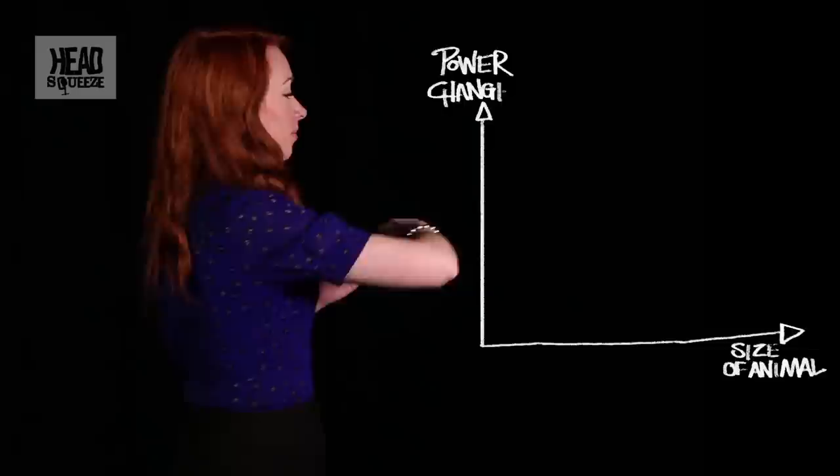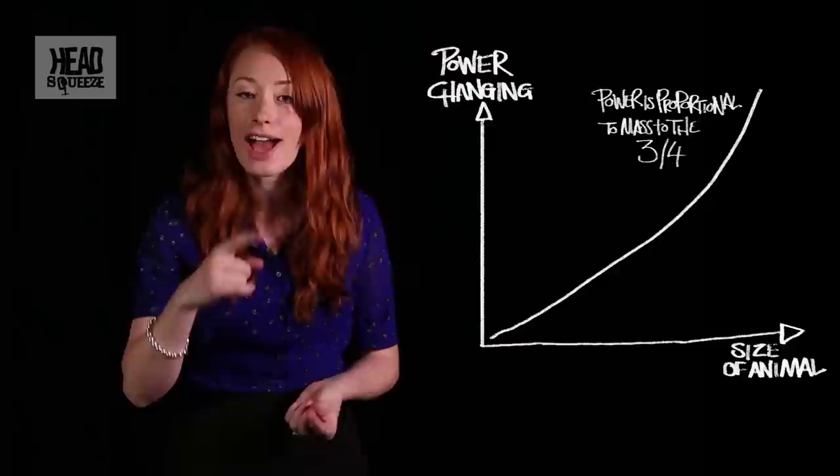Now in fact, when you look at how power changes with how big an animal gets, it follows a curve just like this, with power being proportional to mass to the three quarters. Now this means that although the cat is a hundred times bigger than a single mouse, it's actually only about 32 times stronger.